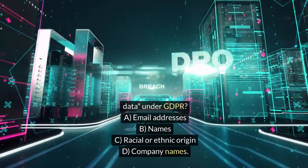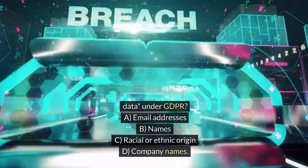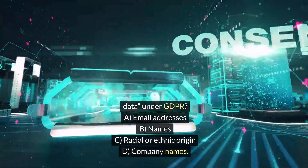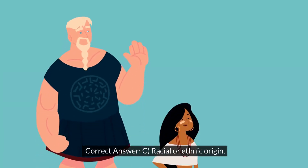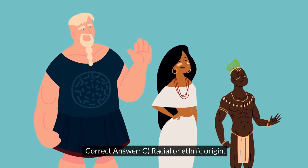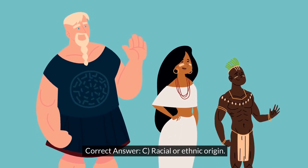Which of the following is considered sensitive personal data under GDPR? A. Email addresses. B. Names. C. Racial or ethnic origin. D. Company names. Correct answer: C. Racial or ethnic origin.